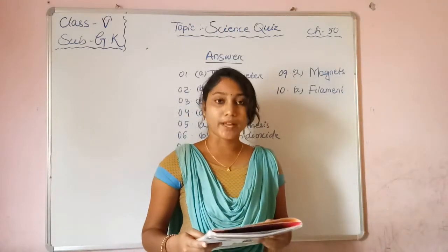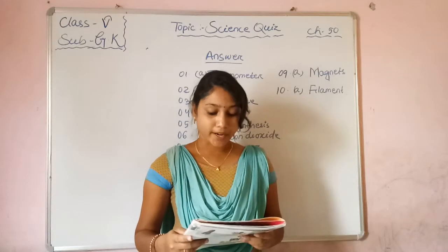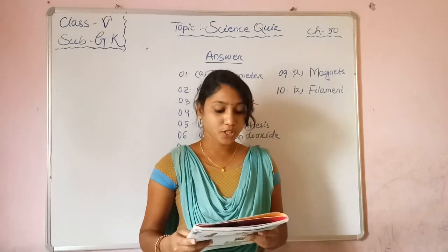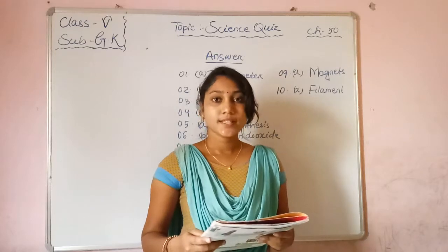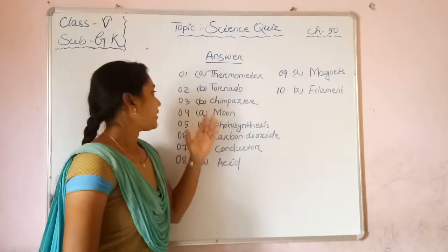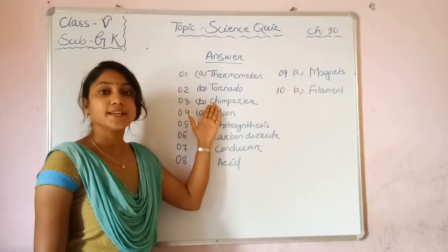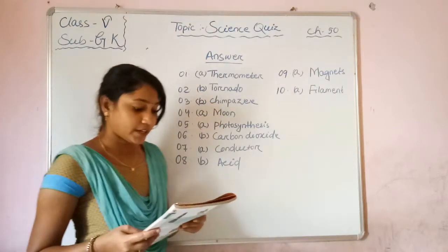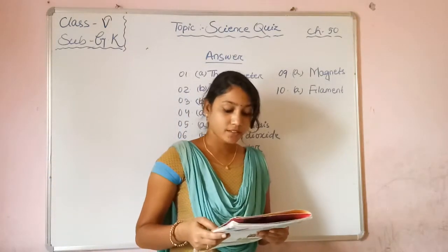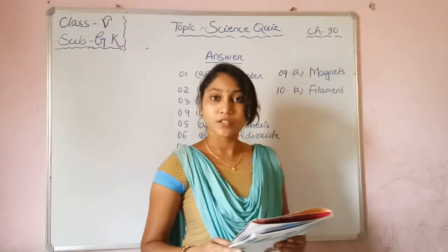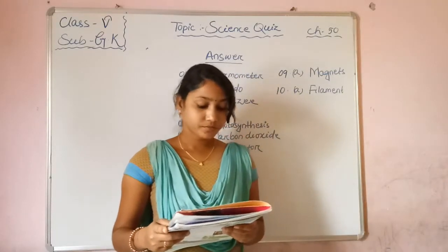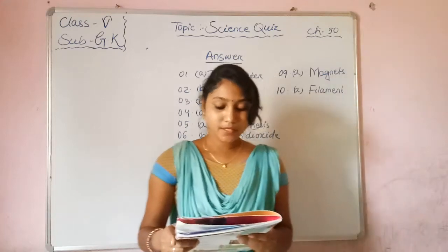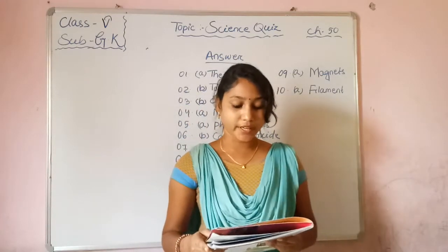Next question: An animal that closely resembles man. Options: Option A — panda, Option B — chimpanzee. The correct answer is Option B — chimpanzee. An animal that closely resembles man is a chimpanzee.